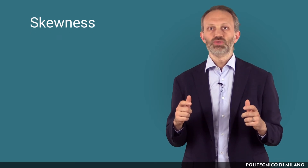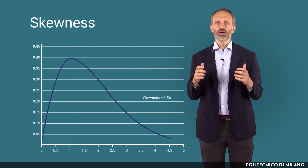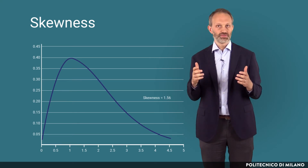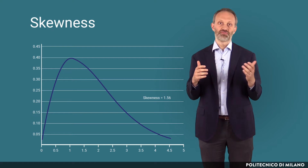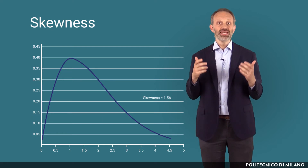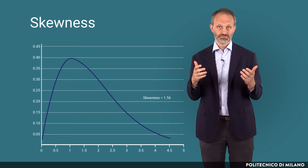A final univariate statistic that may be interesting is the skewness, which gives us a measure of the asymmetry of the distribution. A positive value means a distribution with a tail to the right, like the one in the figure. A negative value means a tail to the left. A symmetric distribution has skewness equal to zero, but the opposite is not necessarily true.